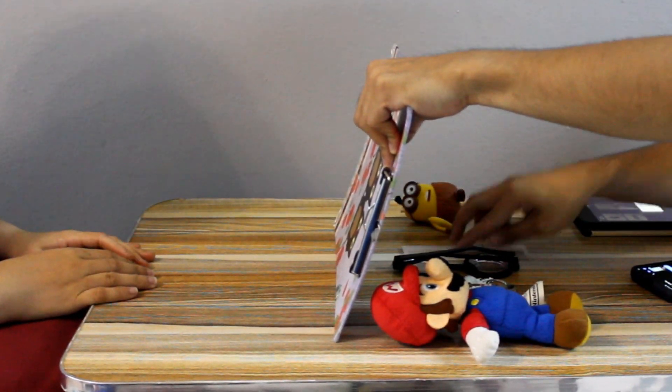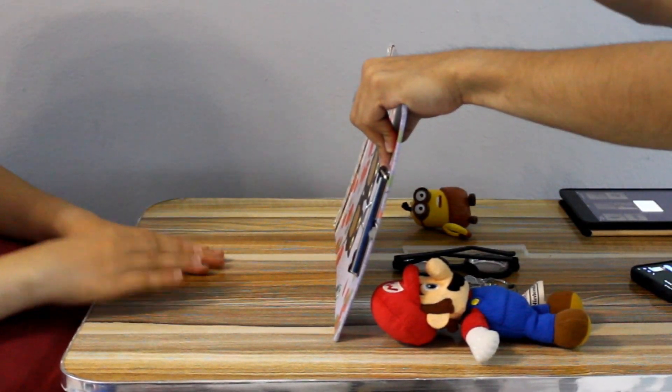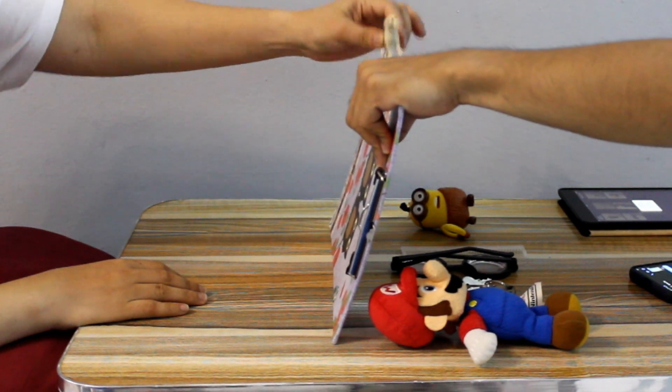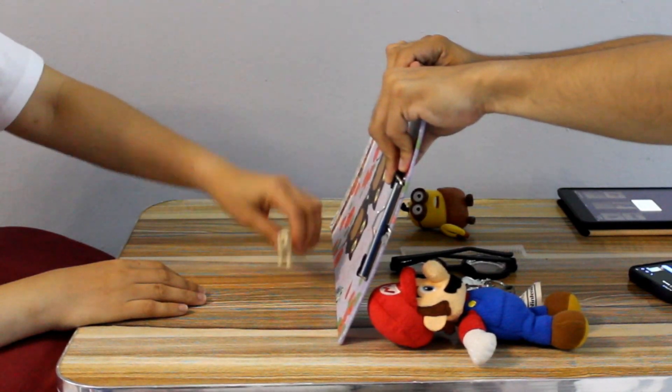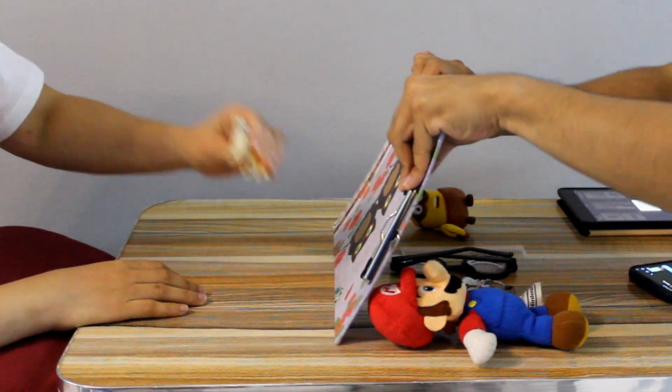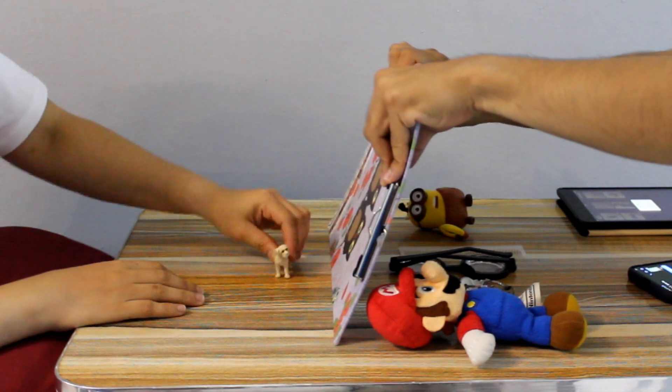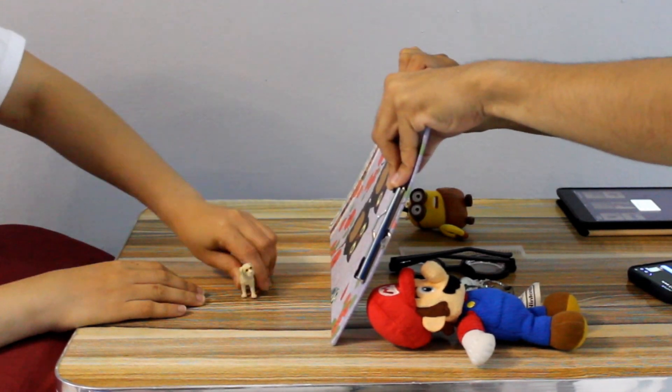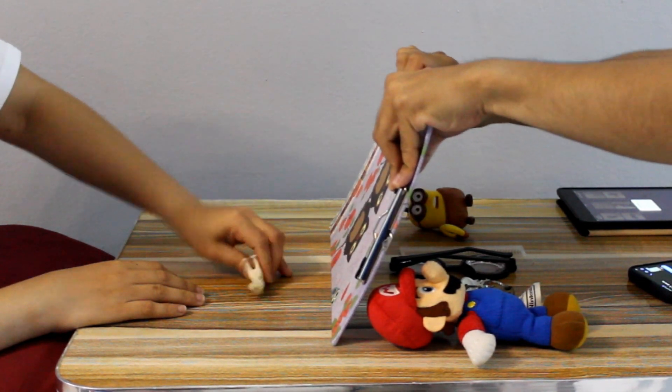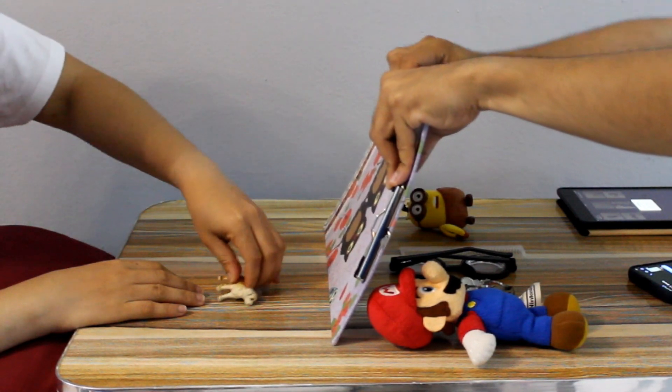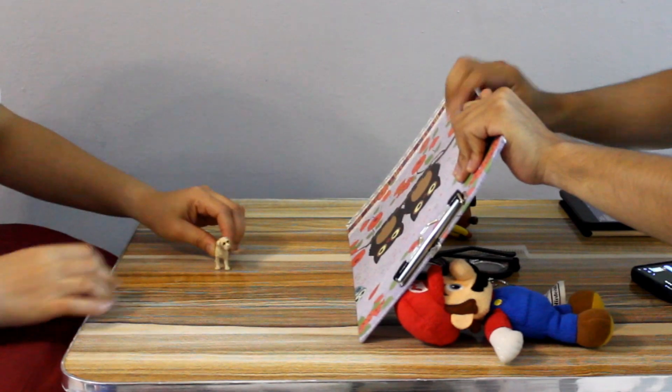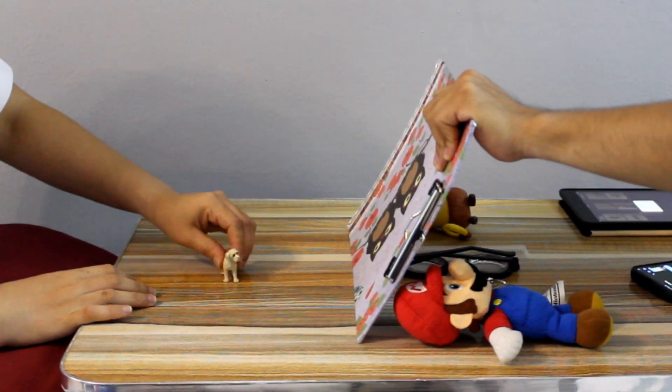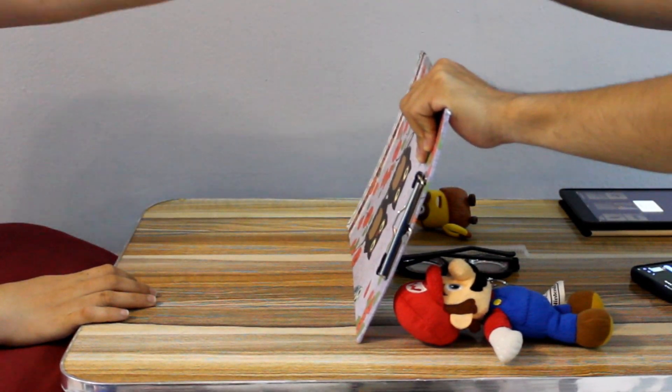Good job. Look what I have. Dog. What's the sound of the dog? It's a brown and white dog, looks fluffy, right? My turn. Thank you.